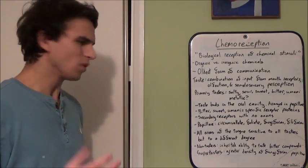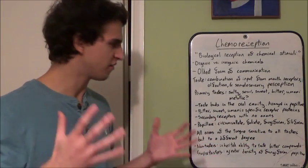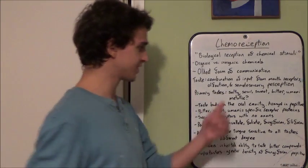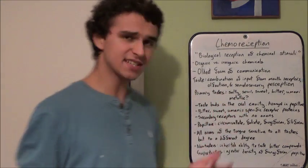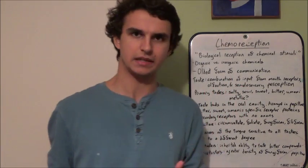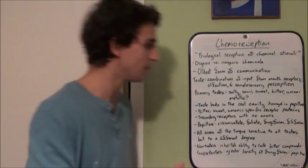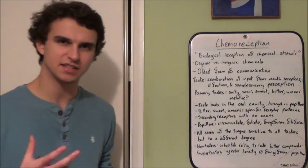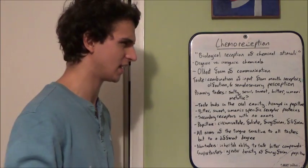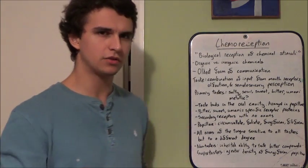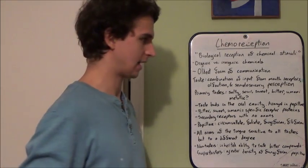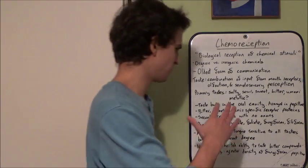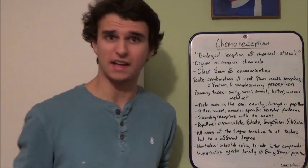What are the five — actually six now — primary tastes? There's salty, sour, sweet, bitter, and umami. Umami literally translates as 'delicious' and is found in various artificial flavourings and certain amino acids — L-glutamate and aspartate. There is another flavour currently in debate: metallic.